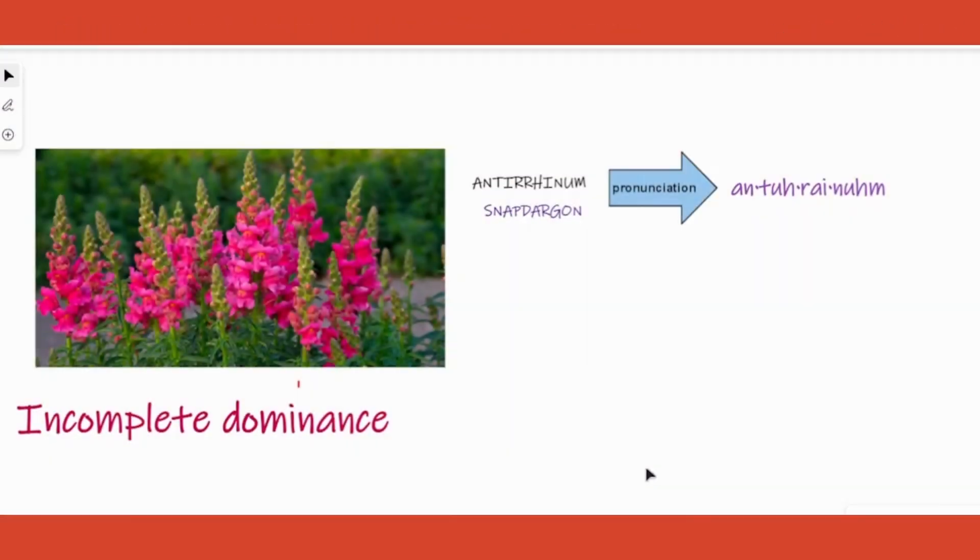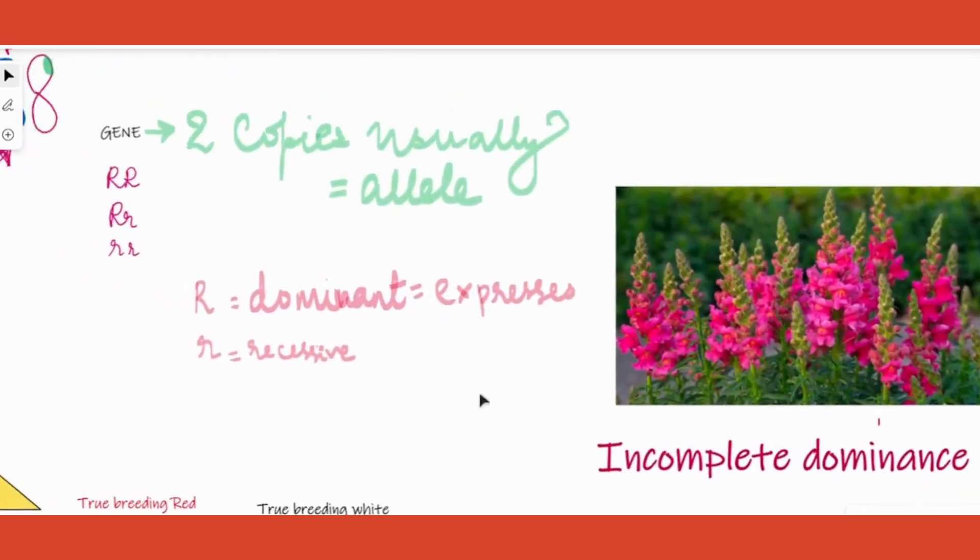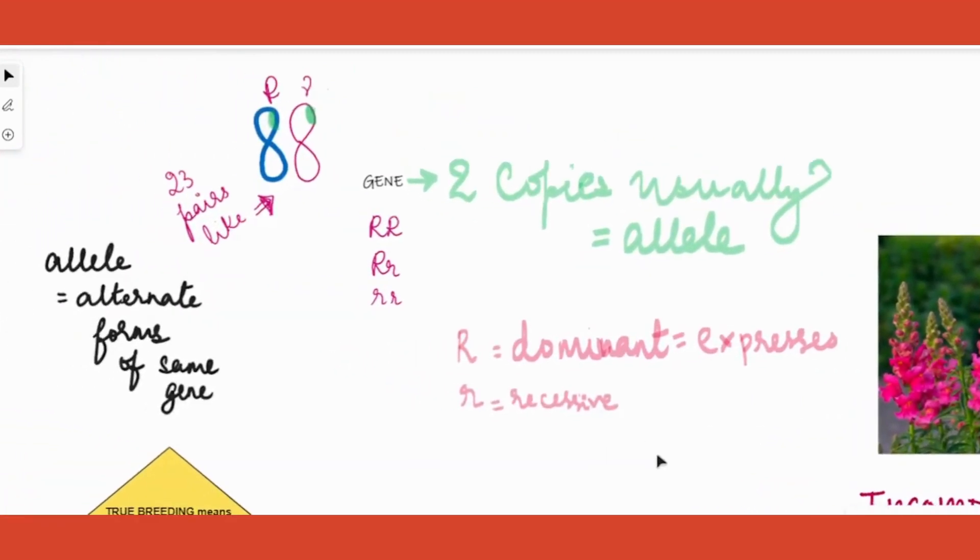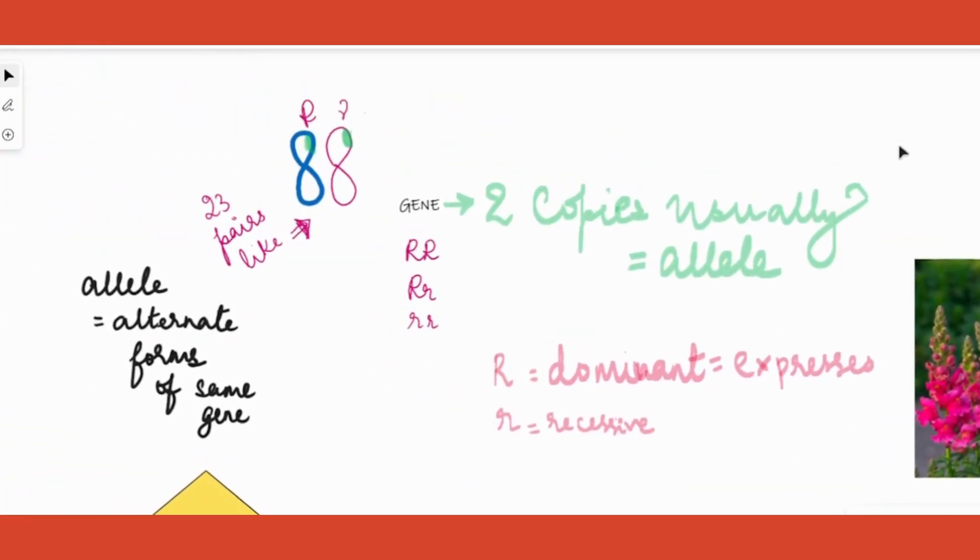Hello students, today let us learn about incomplete dominance. It is usually seen in a plant called snapdragon, also called as antirrhinum. In order to understand this concept, let's go back and revise what we have learned in Mendelian genetics.